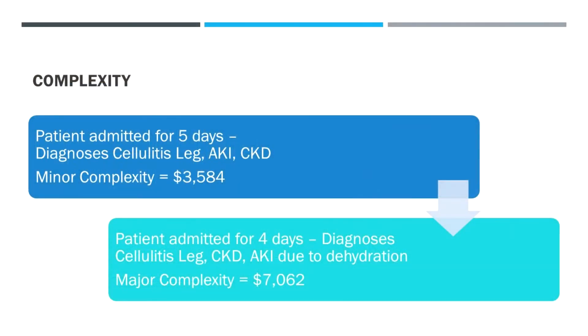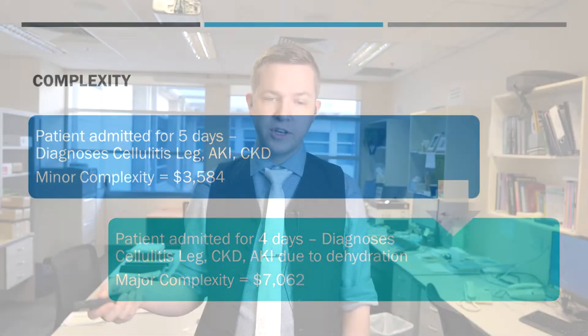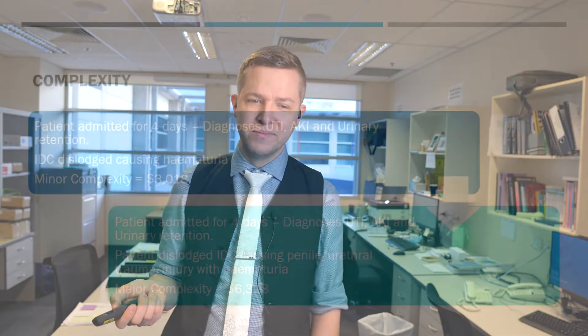Here's another one: a patient admitted for five days with leg cellulitis, AKI, and CKD. Here we've qualified that the AKI is due to dehydration, which is likely secondary to the cellulitis, and the complexity increases to major and income doubles. Are you seeing a trend here? I am.